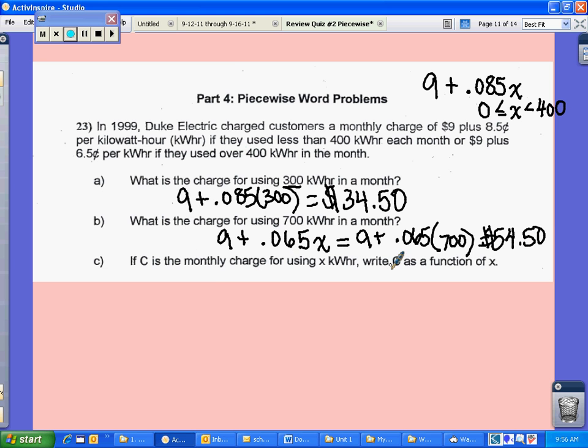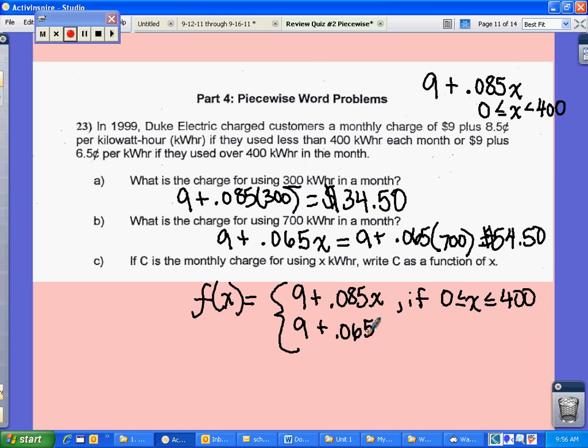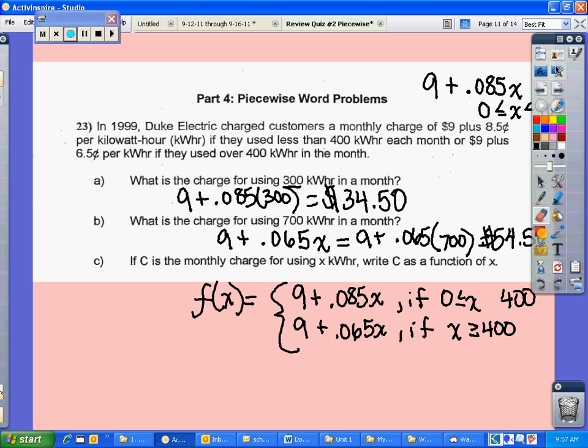The last one, we're going to then write the piecewise function out. So f of X equals 9 plus .085X if it's between 0 and 400. And then we're going to use the other function if it's over 400. Whoops, I should not have a greater than or equal sign in that first interval. Because it says less than 400. So this should just be a less than symbol.